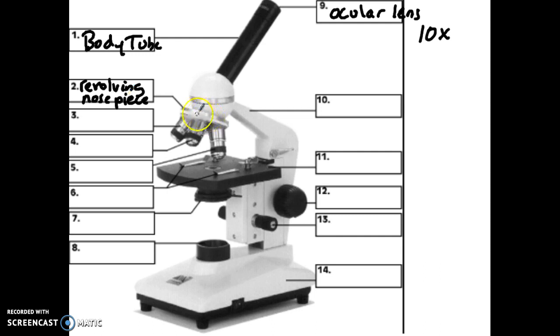The revolving nose piece, what you would do is you would change that manually, and what that will do is it will physically change the objective lenses that are found below. This compound light microscope has three different objective lenses.